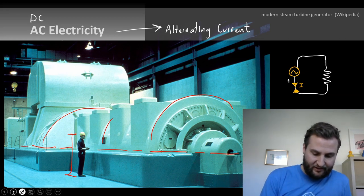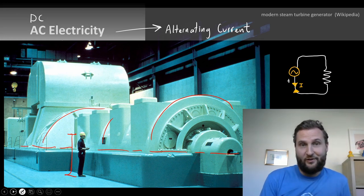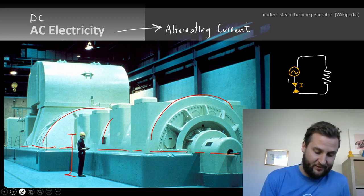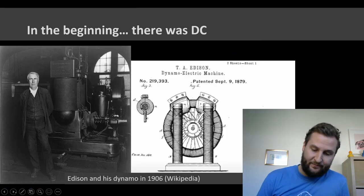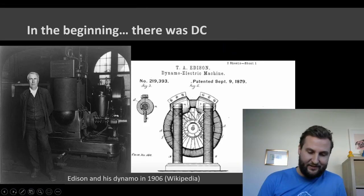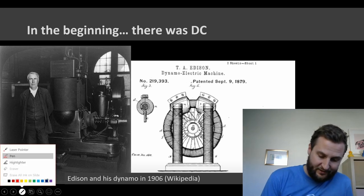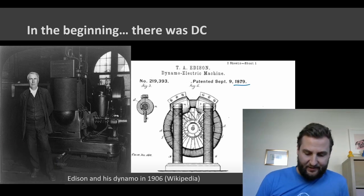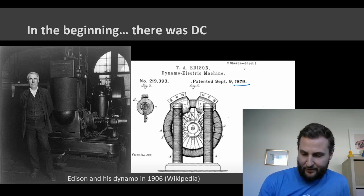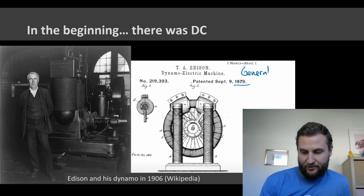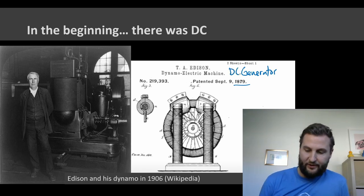I'll be looking at a few pictures to give us some motivation about generating AC electricity. Before AC came along there was DC. In this photo we see Edison with his dynamo — a dynamo is basically just a DC generator, so that's going to generate DC current.